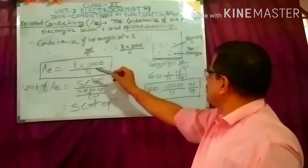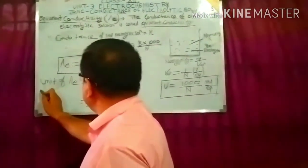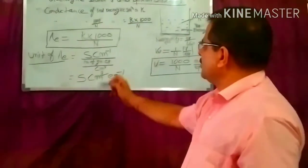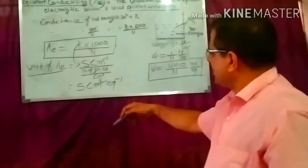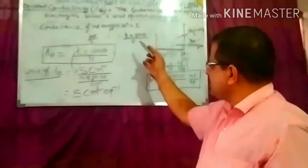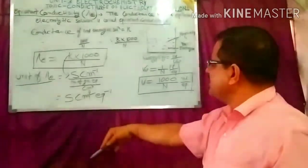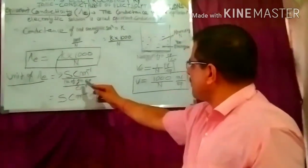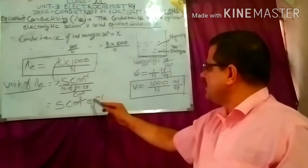Here, N (capital) is the normality of the solution. The unit of equivalent conductivity is derived from the unit of κ (S·cm⁻¹) divided by normality (gram equivalents per cm³), which gives S·cm²·equivalent⁻¹.